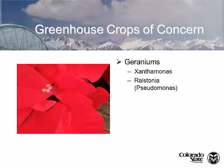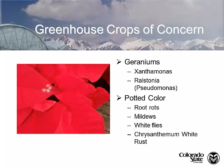Geraniums have a big issue with bacterial wilt called Xanthomonas, which can only be controlled through good sanitary practices and using pasteurized potting media. Ralstonia is a bacterial disease that puts our whole U.S. agriculture at risk — it's controlled by APHIS and is a quarantine issue. Other concerns include root rots, mildews, white flies, and chrysanthemum white rust.